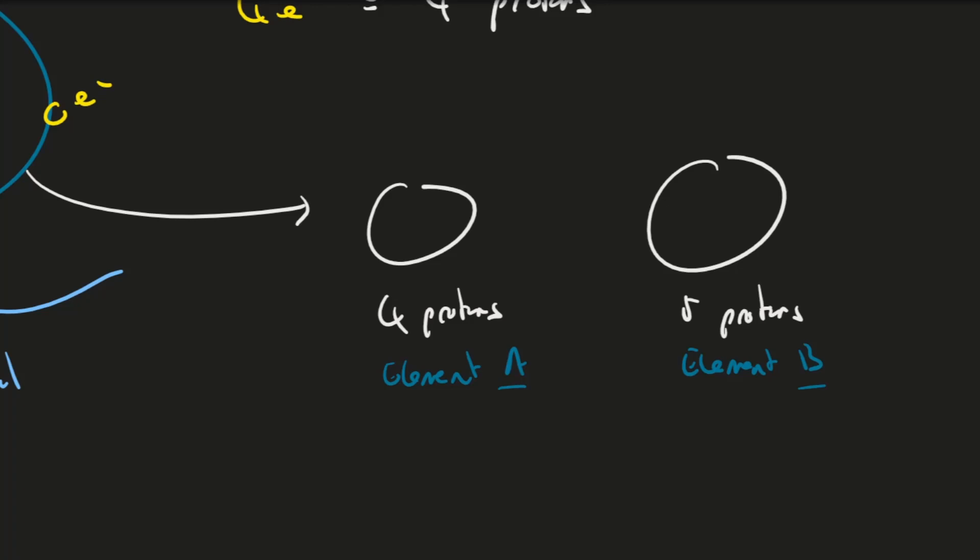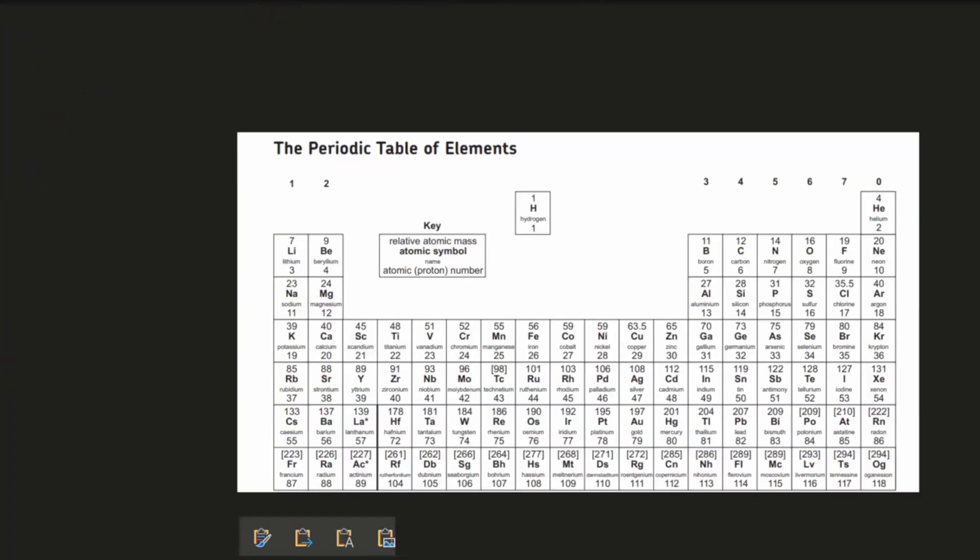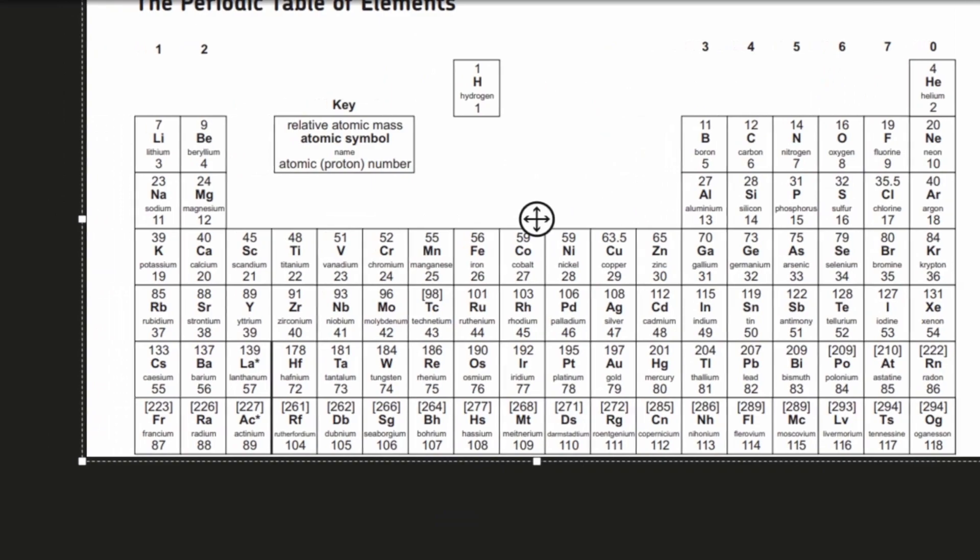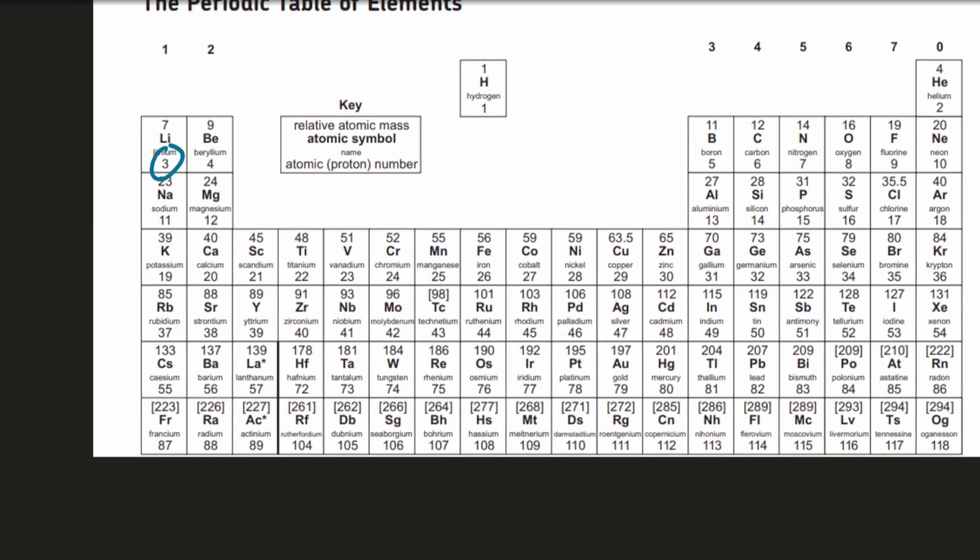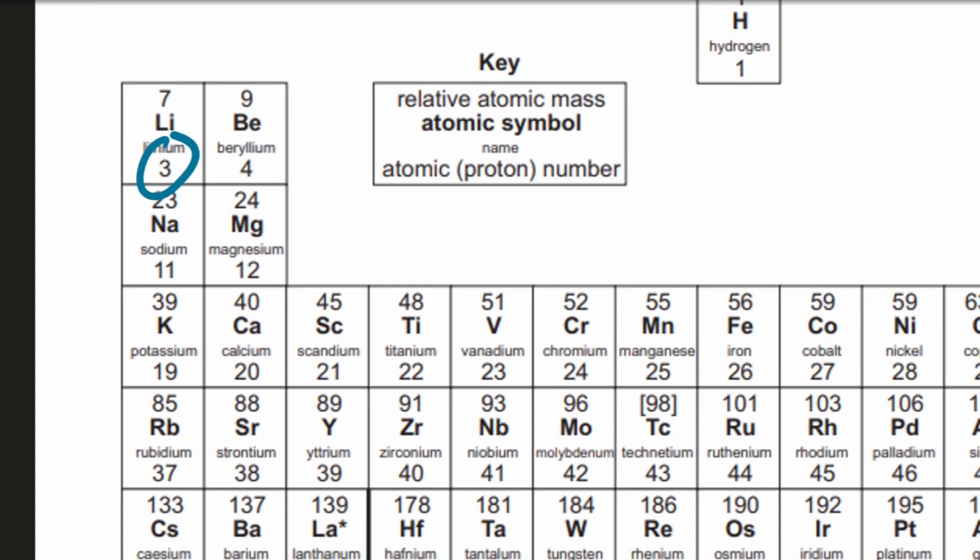Here is our periodic table. The smaller number when you look at any individual box for an element tells you the atomic number. The atomic number is the number of protons, and it's given to us here.